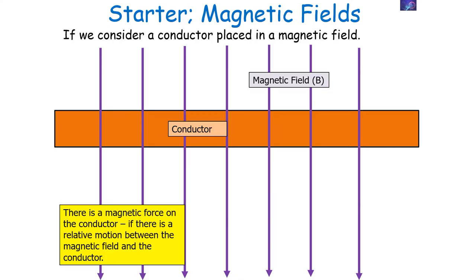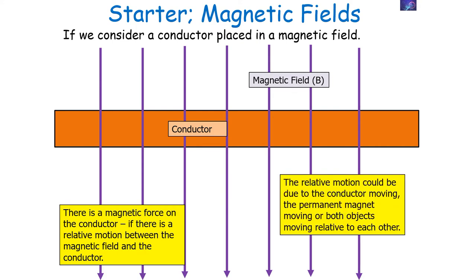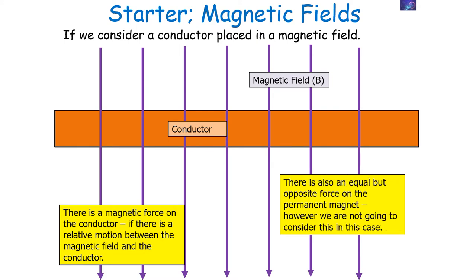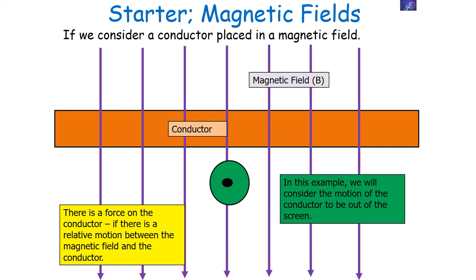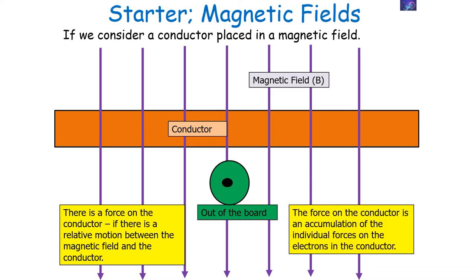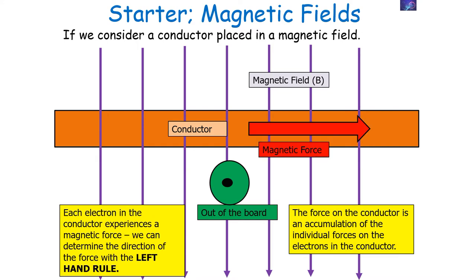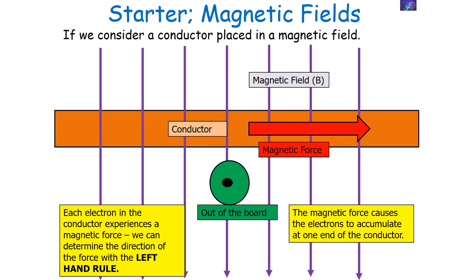Now let's look at electromagnetic induction. If we consider a conductor placed in a magnetic field, there will be a magnetic force on the conductor if there's relative motion between the magnetic field and the conductor — this can mean the conductor moving, the permanent magnet moving, or both moving relative to each other. Using Fleming's left-hand rule, we can work out the direction of the conductor's motion, and we understand that the force on the conductor is an accumulation of individual forces on the electrons in the conductor. Each electron experiences a magnetic force, and because this force acts on all electrons, they accumulate at one end of the conductor.